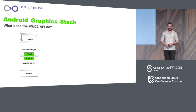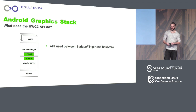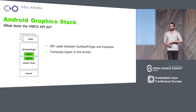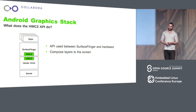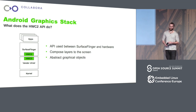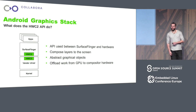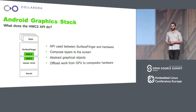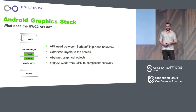So, what's the HWC2 API? It's an API used to communicate between Surface Flinger and the hardware drivers. It allows applications to submit layers to be composed onto the screen. Each of these layers is a buffer with some properties attached to it. It also provides some abstractions for graphical objects. The whole idea of having the HWC2 API to begin with is to allow offloading work from the GPU onto specialized hardware.